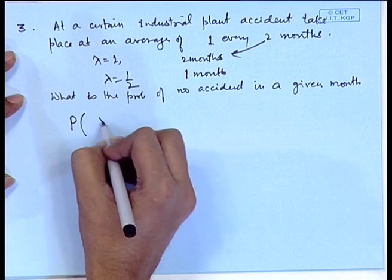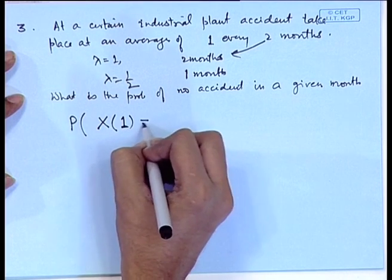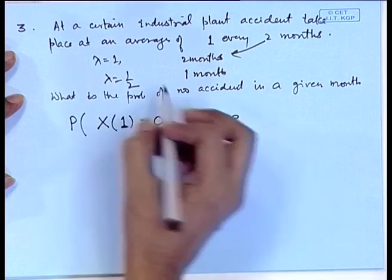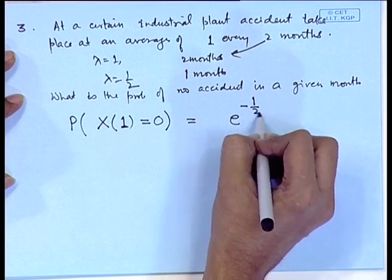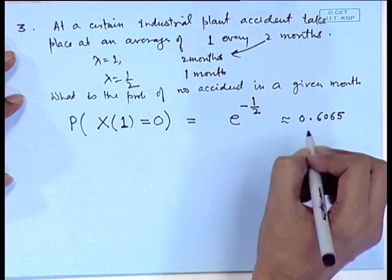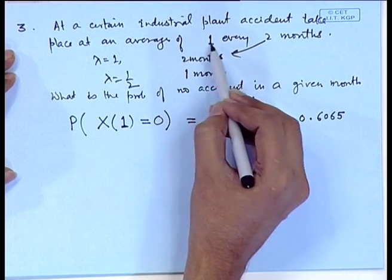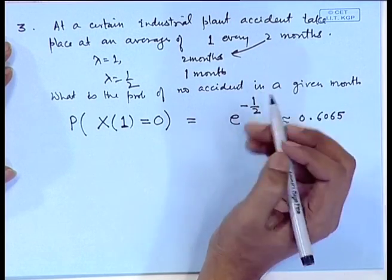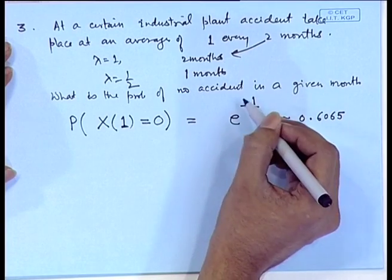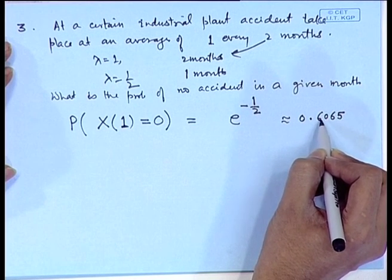P(no accident in a given month) = P(X₁=0). With λ=1/2, this is e^(-λt) = e^(-1/2) ≈ 0.6065. So there is a 60% chance of no accident in a given month. Although the rate is 1 accident per 2 months, which might suggest 50%, the actual probability of no accident is higher at 0.60.